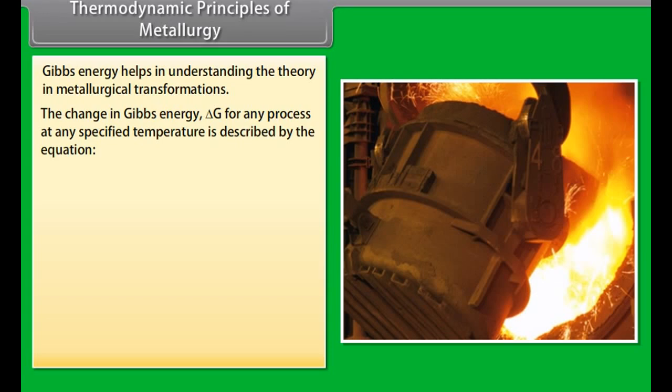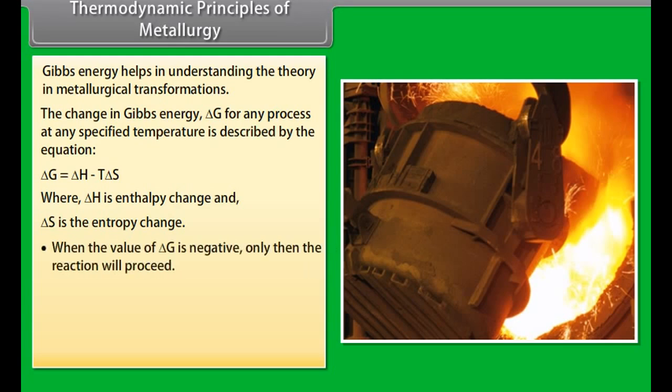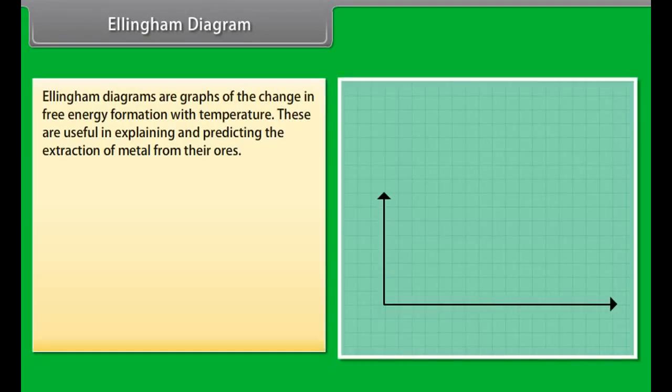Let's see the solution. Sn is obtained from SnO2 by using carbon as a reducing agent. Sn is a less reactive metal. Zn is obtained from ZnO using CO as a reducing agent at 1600 Kelvin. Cr is obtained from Cr2O3 using aluminothemic process.